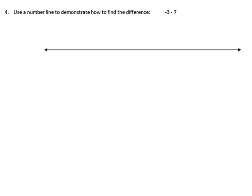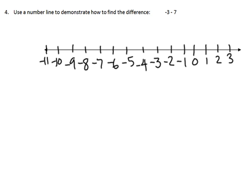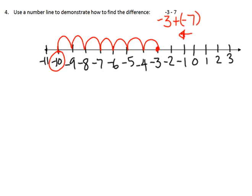Part 4: use a number line to demonstrate how to find the difference negative 3 minus 7. I'll fill in the number line. I always start at whatever the first number is, so I'm starting at negative 3. We can rewrite it as negative 3 plus negative 7, so we need to move to the left: starting at negative 3 and taking away 1, 2, 3, 4, 5, 6, 7 — we end up at negative 10.